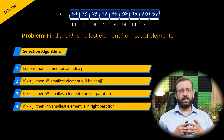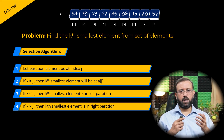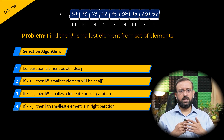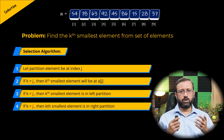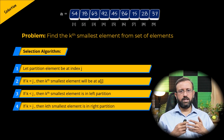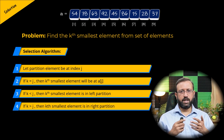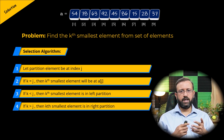So let us look at how to perform the partitioning of the elements. The partition algorithm is the same as the one used in quicksort, where elements are partitioned based on the pivot or the partitioning element into a left subarray and the right subarray.